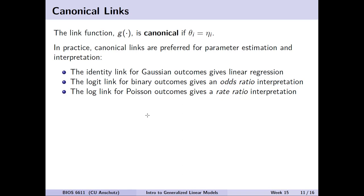One concept worth introducing for next semester is canonical links. A link function g is known as canonical if the parameter of interest theta_i equals our term eta_i. In practice, canonical links are preferred for parameter estimation and interpretation. For example, the identity link, used most commonly for Gaussian outcomes, gives us our linear regression model — essentially saying that x beta equals mu.